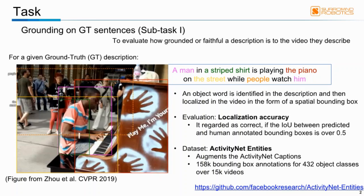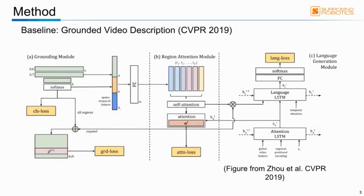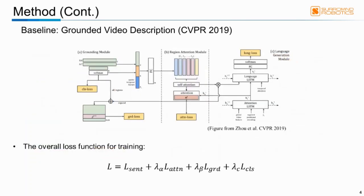For evaluation, the localization accuracy is used. If the intersection over union between the predicted bounding box and the human annotated bounding box is over 0.5, the prediction is regarded as correct. For the dataset, we use ActivityNet Entities, which covers 158k bounding box annotations for 432 object classes over 15k videos. As a baseline model, we exploit the Grounded Video Description, GVD, model presented in CVPR 2019 by Joe et al. It has two objectives: generating the video description as shown in C, language generation module, and grounding the description to the visual scene as shown in A, grounding, and B, region attention module. GVD formulates the problem as a joint optimization over language generation and grounding. Based on the three modules, the overall loss function for training is set as follows.